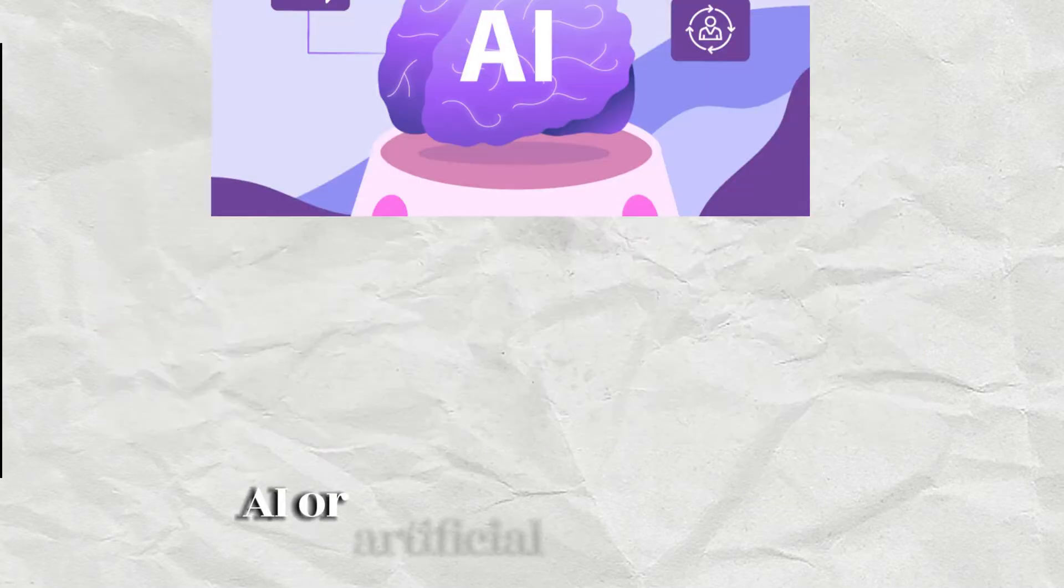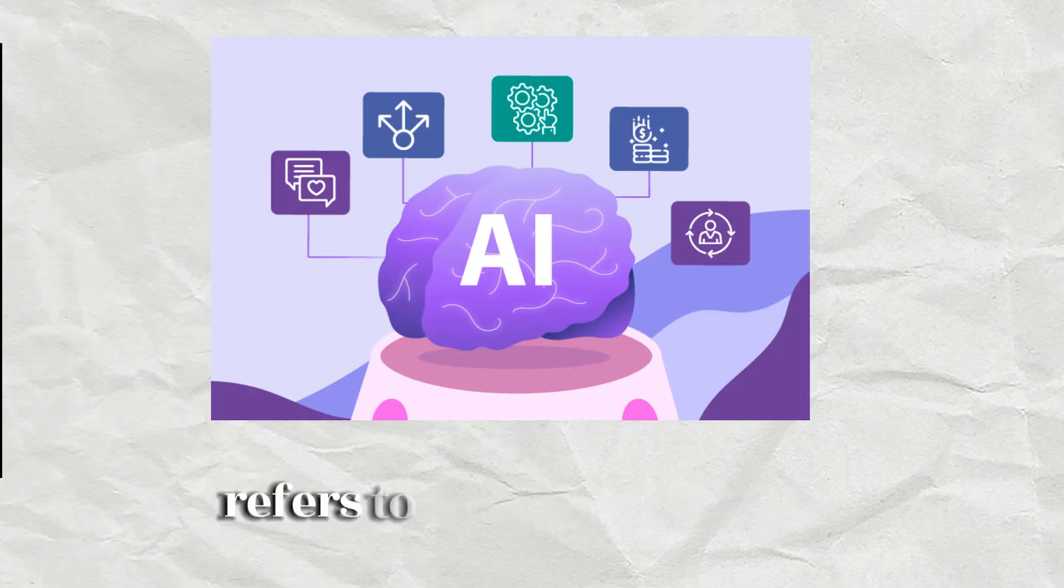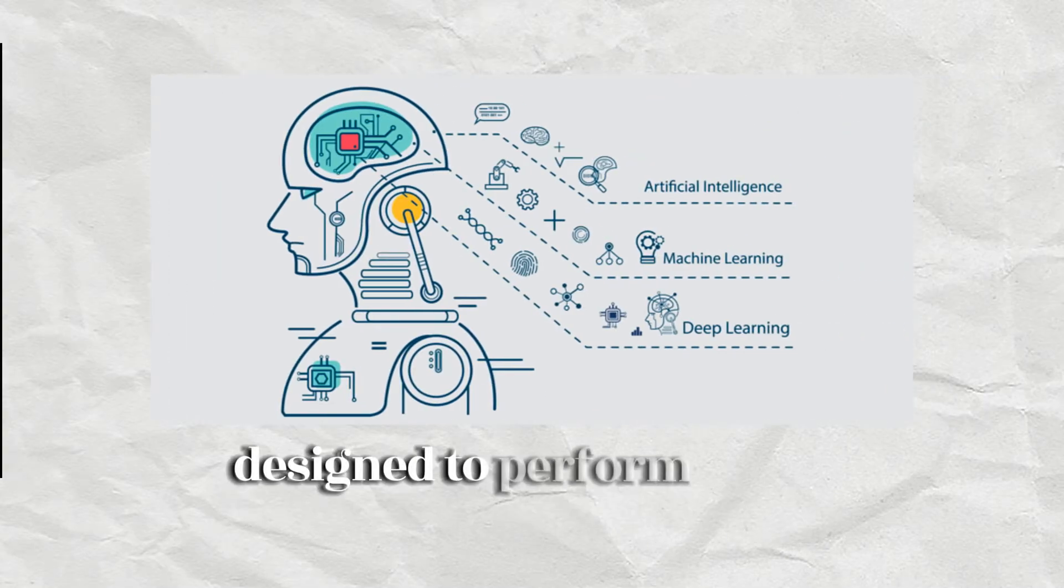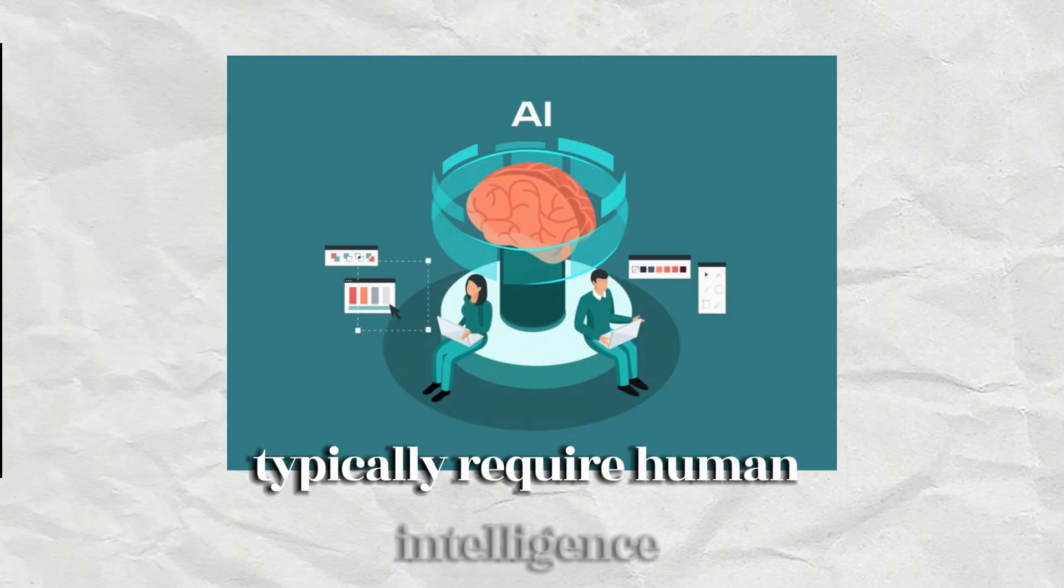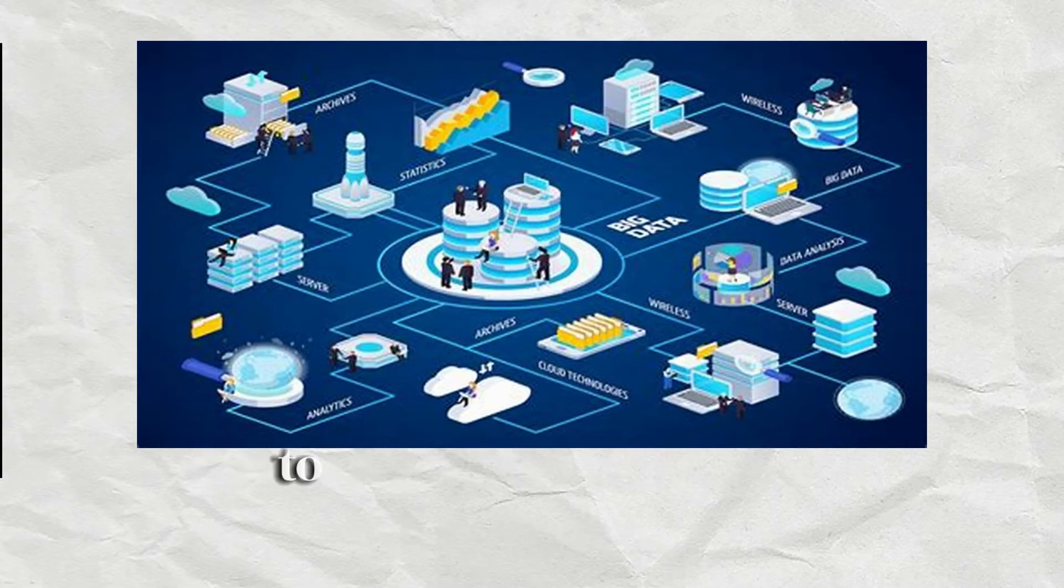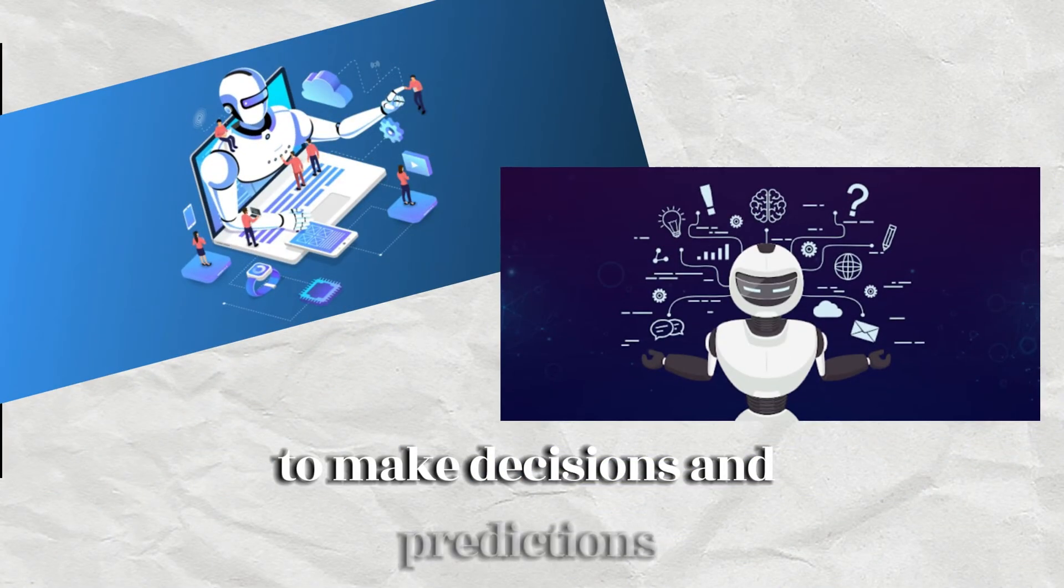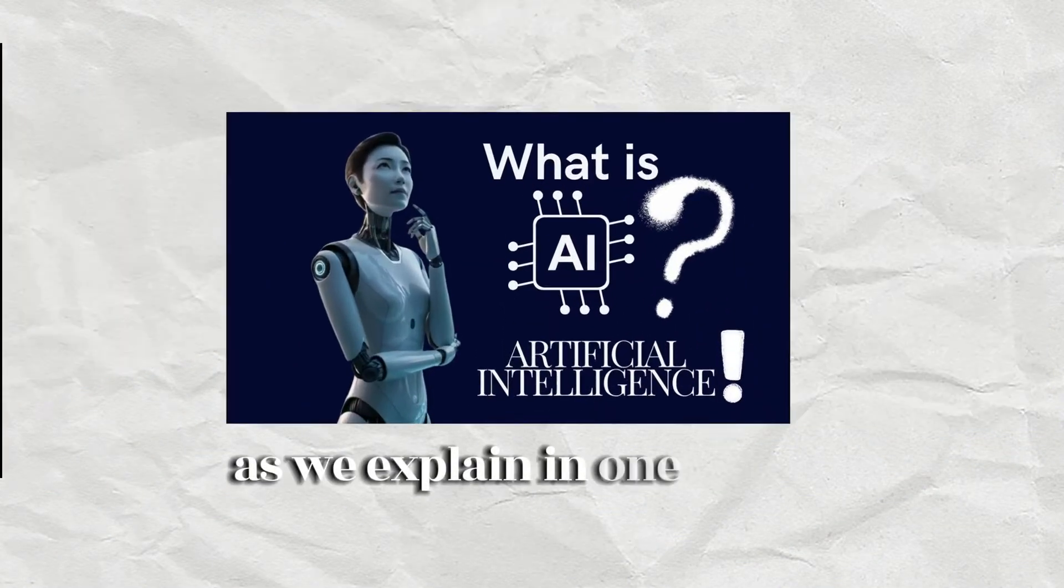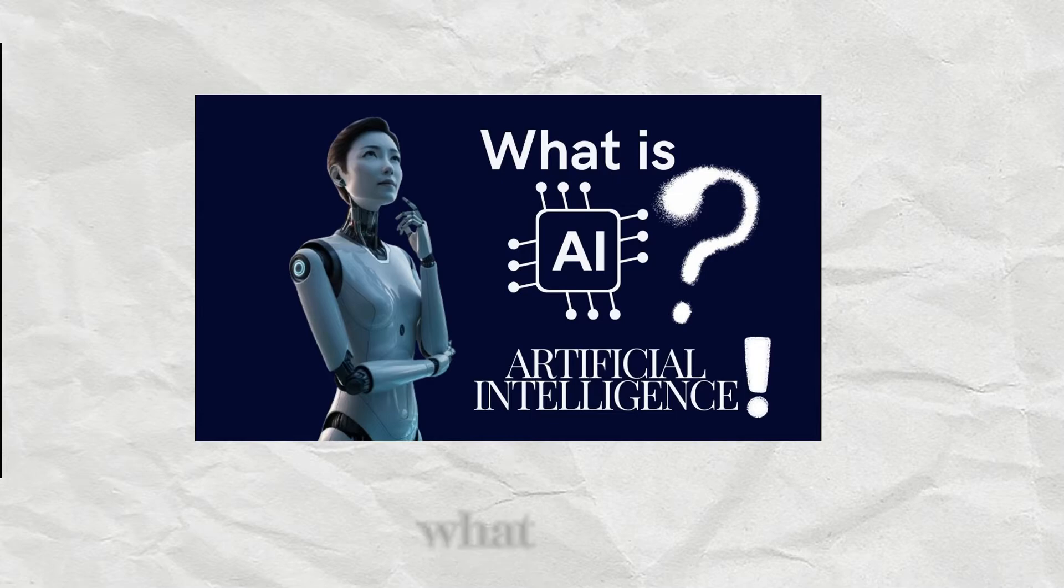AI, or artificial intelligence, refers to computer systems designed to perform tasks that typically require human intelligence. These systems learn from vast amounts of data to make decisions and predictions. As we explain in one of the videos in this playlist, what is AI?